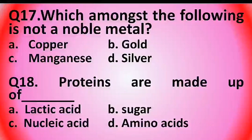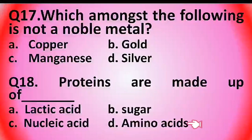Question 17: Which amongst the following is not a noble metal? Options are: copper, gold, manganese, or silver. The answer is option C: manganese.